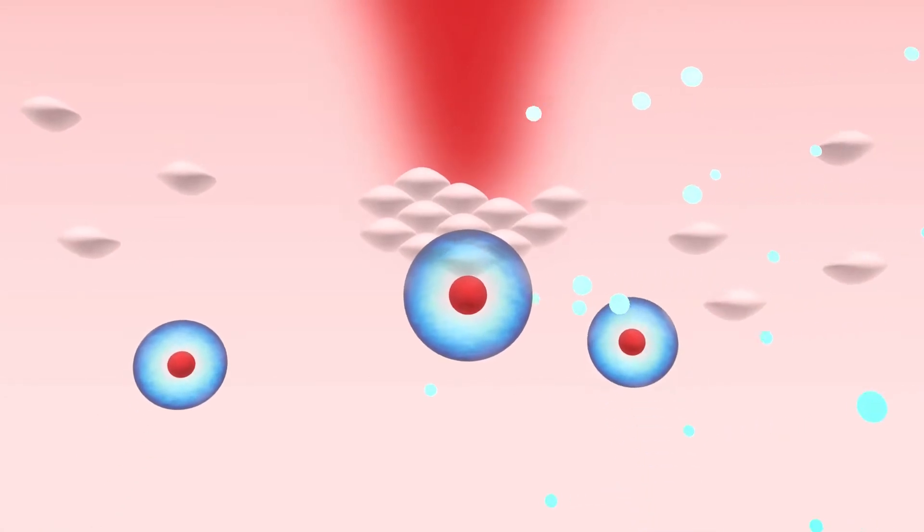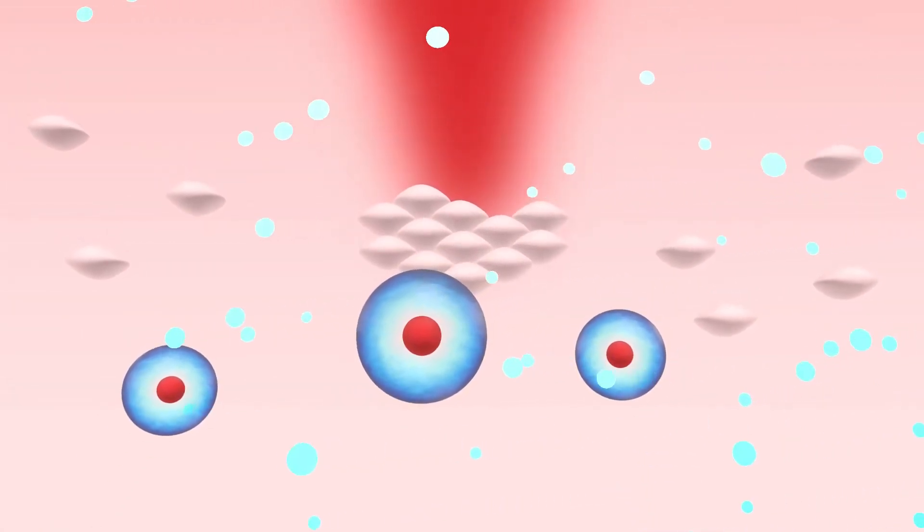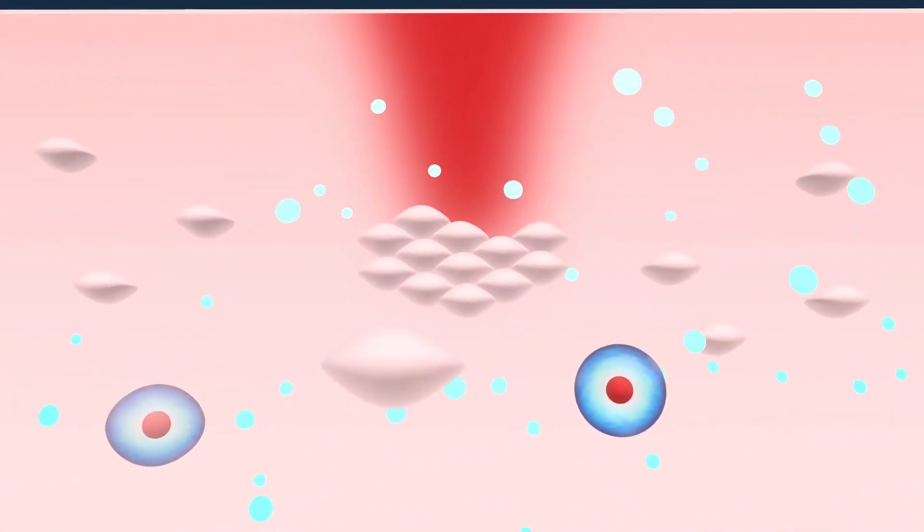HBOT stimulates the exponential release of stem cells, which are blank cells that can turn into any other cell, easily rebuilding injured tissue.